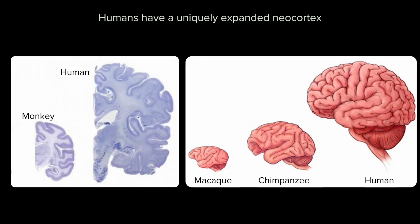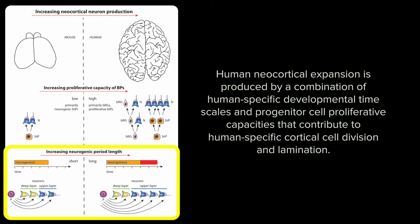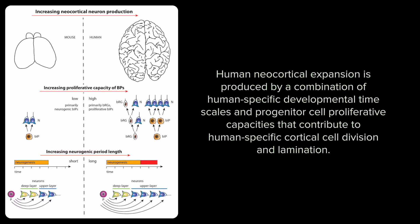Our cortex also demonstrates greater plasticity and greater intra-areal connectivity compared to primates. Human brain development follows many highly conserved mechanisms of mammalian brain development, such as neural stem cell proliferation and neurogenesis. Throughout these processes, unique human neocortical expansion is produced by a combination of human-specific developmental timescales and progenitor cell proliferative capacities that contribute to human-specific cortical cell division and lamination.